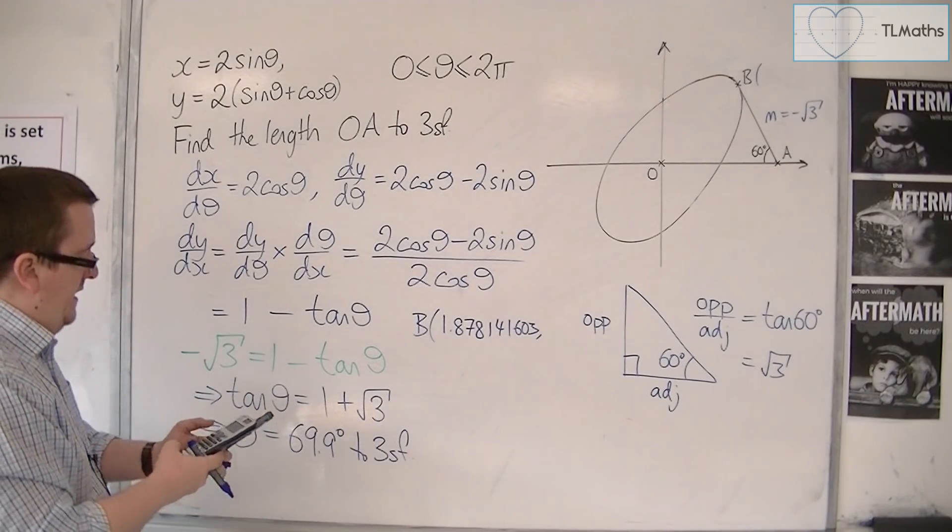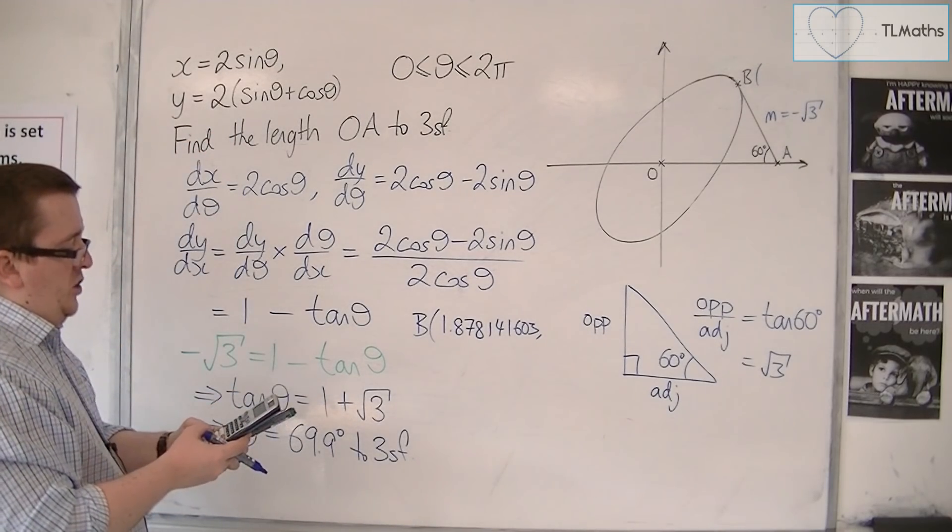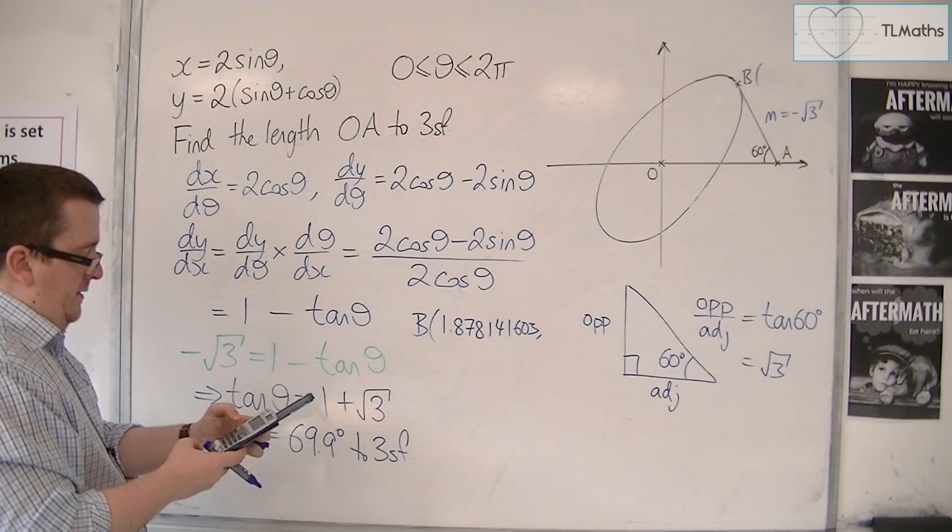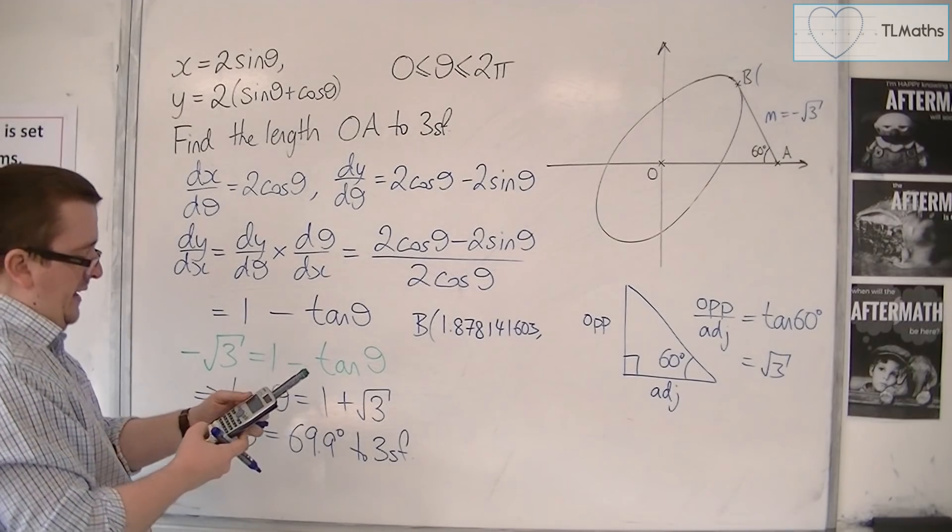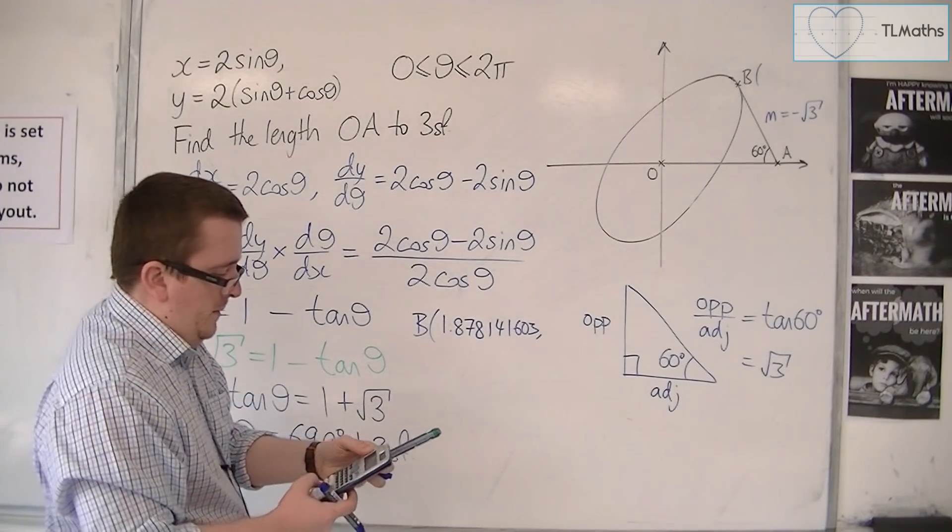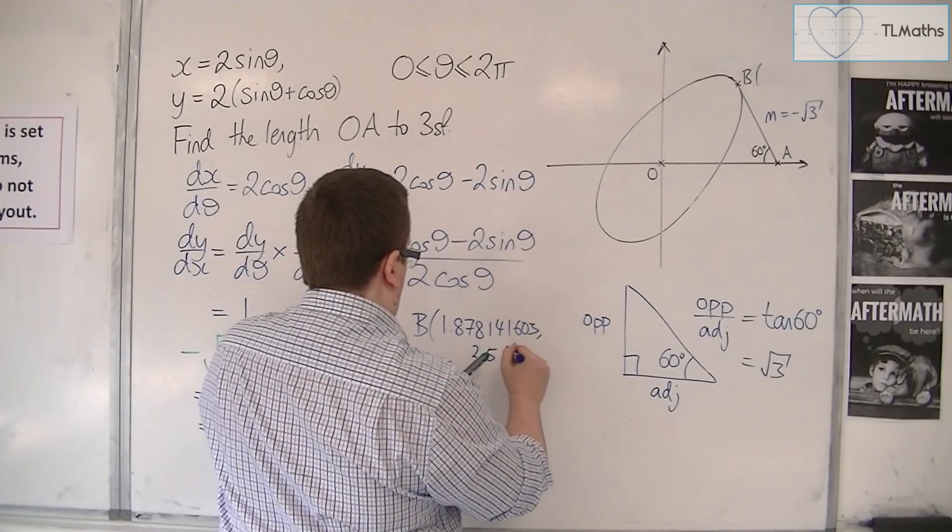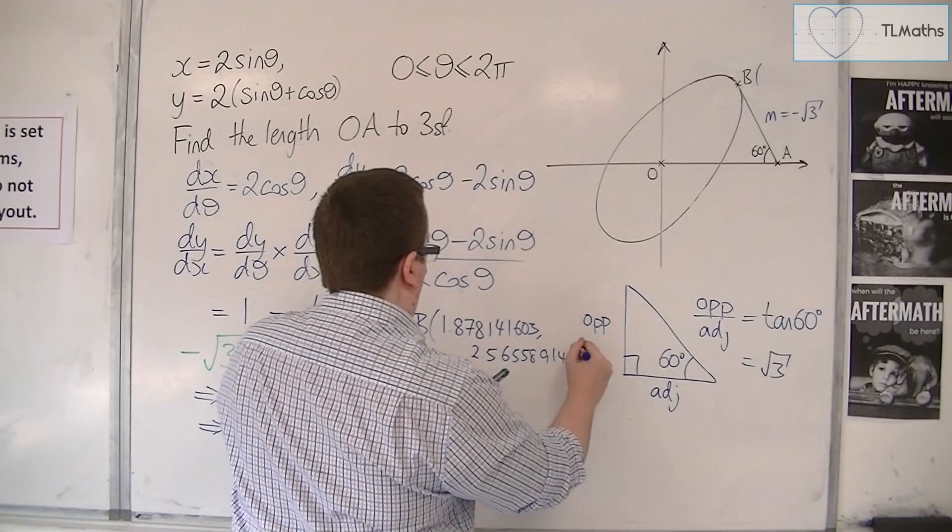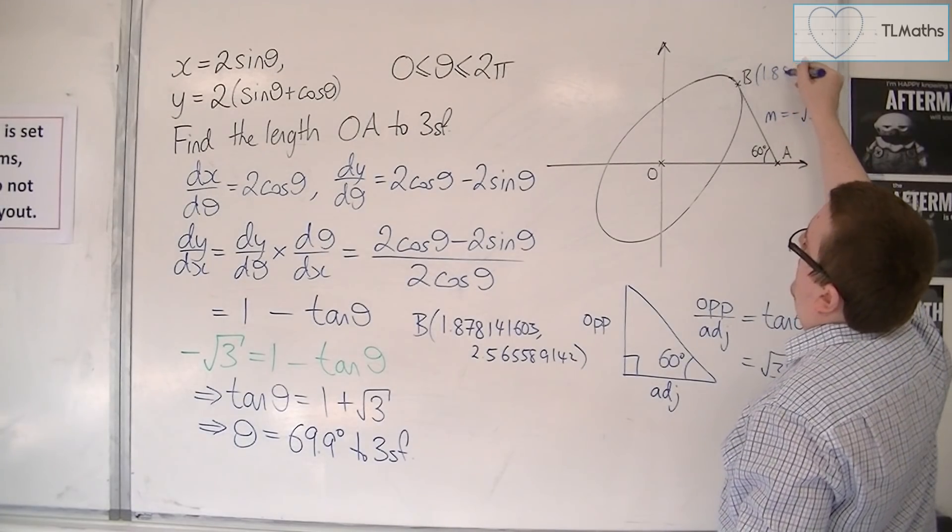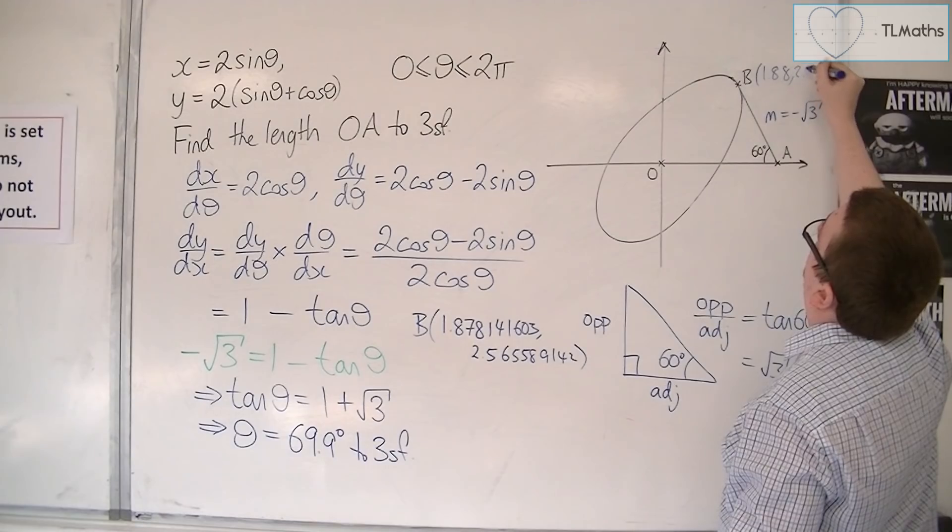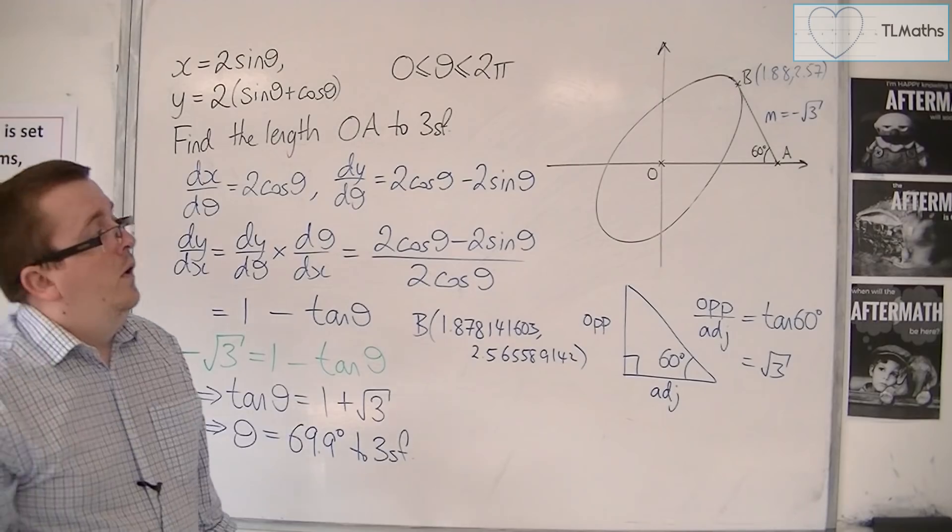Then the y-coordinate, substitute inverse tan of 1 plus root 3 into y. We're going to get 2 lots of sin theta plus cos of the answer, which equals 2.565589142. So this is approximately 1.88 and 2.57.